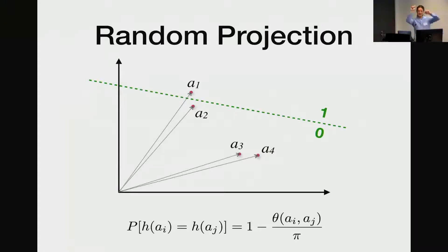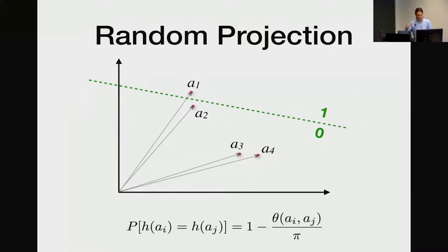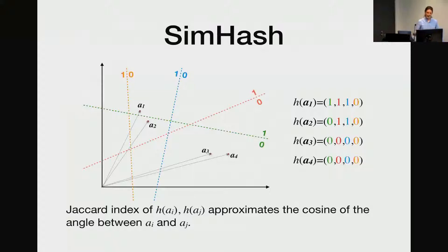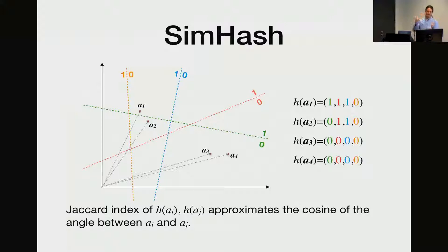One property of this projection is that the probability that two vectors are mapped to the same value is related to the angle between the vectors — and that's exactly what I want with addresses. If you think of addresses on the globe, you've got an angle in between them. That's exactly what's used in SimHash. The idea is to repeat the random projection many times, and then if you compute the Jaccard index of all those values, it approximates the cosine of the angle. So I thought: I've got it. Let's evaluate.